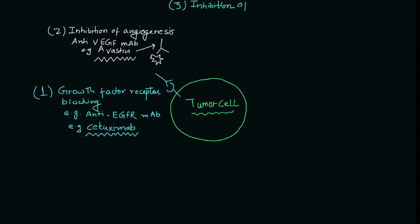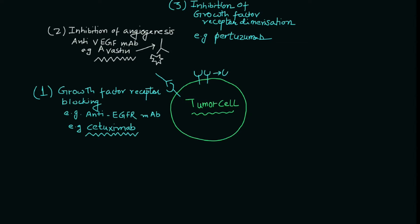The third action is via the inhibition of growth factor receptor dimerization. Most receptors work through dimerization, and after dimerization they transmit the signal inside the cell. To block that, we have an antibody — the example is pertuzumab. As shown schematically, the antibody binds to two receptors and blocks their dimerization.